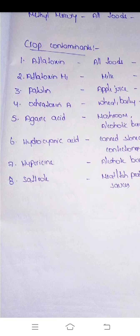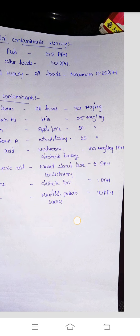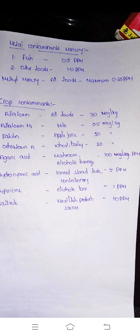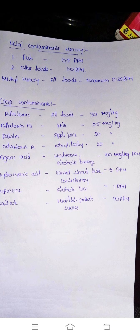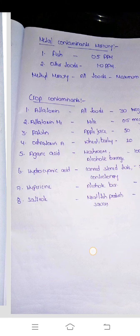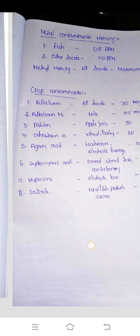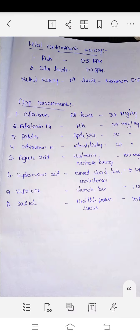Naturally occurring toxins: agaric acid is 100 ppm. Hydrocyanic acid for canned stoned fruits and confectionery is 5 ppm. Hypericin for alcoholic beverages is 1 ppm. Saffrole for meat, fish products and sauces is 10 ppm. These are the limits for naturally occurring substances in food products under food safety standards.